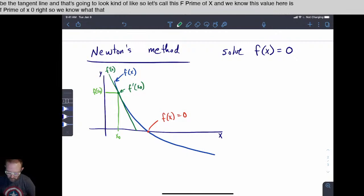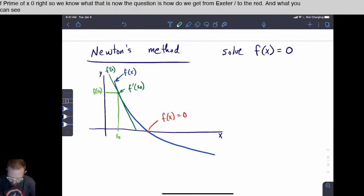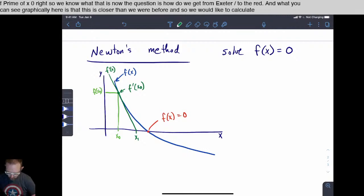All right, so we know what that is. Now, the question is, how do we get from x zero over to the red dot? And what you can see graphically here is that this is closer than we were before. And so we would like to calculate what is x one.